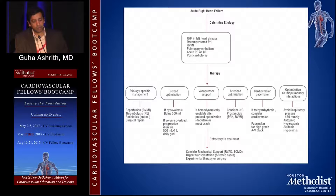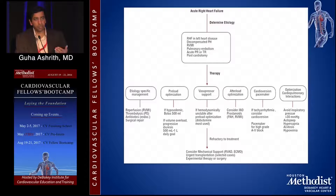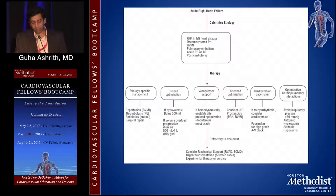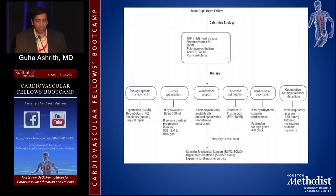General principles for treating shock due to RV failure include preload optimization. The optimal CVP once patients have RV failure is around 10 to 12. If the patient is dry with a CVP of 5, it is reasonable to give judicious volume, but you must be careful not to overload them. In these circumstances, a Swan-Ganz catheter is very useful for targeted, guided management of RV failure. If patients don't improve, you are looking at starting an inotrope — either dobutamine or milrinone depending on whether the patient has hypotension or not.